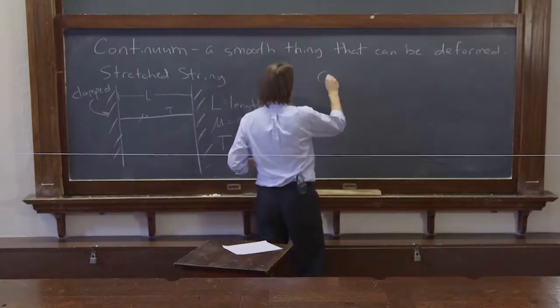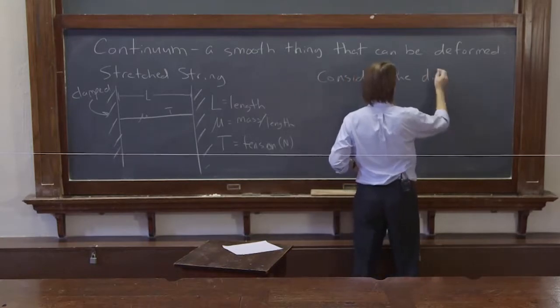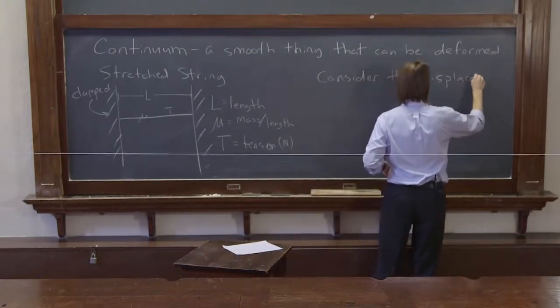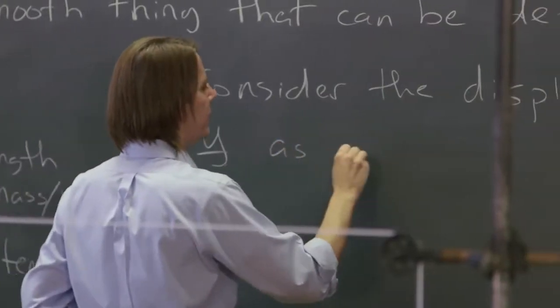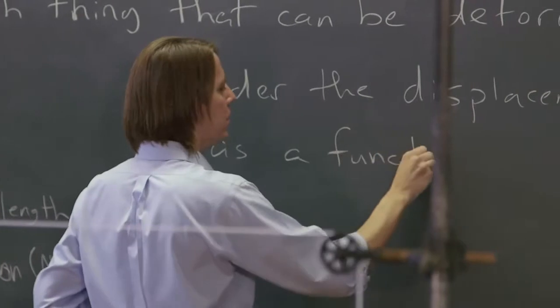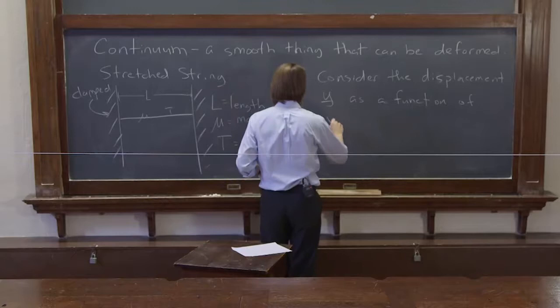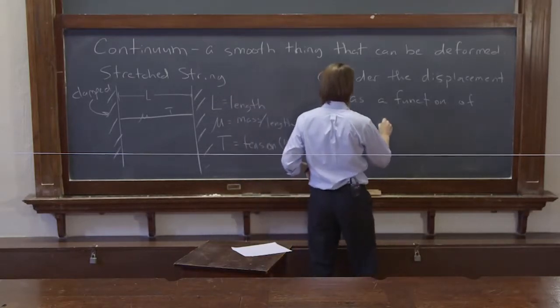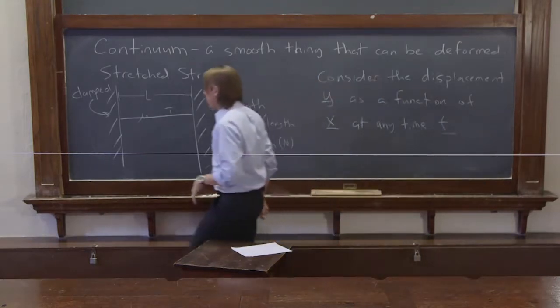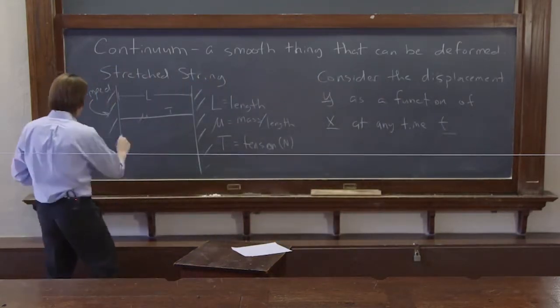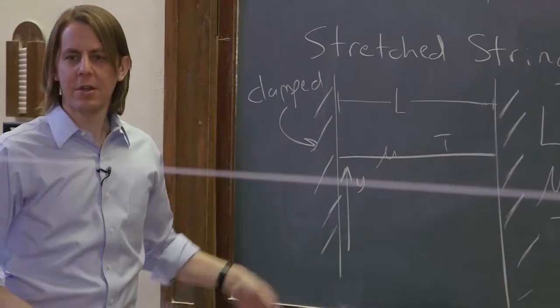So how we're going to set it up mathematically is we're going to consider the displacement y as a function of x at any time t. So if we want to put axes on here, then this is the y-axis. That would be a deflection of the string.